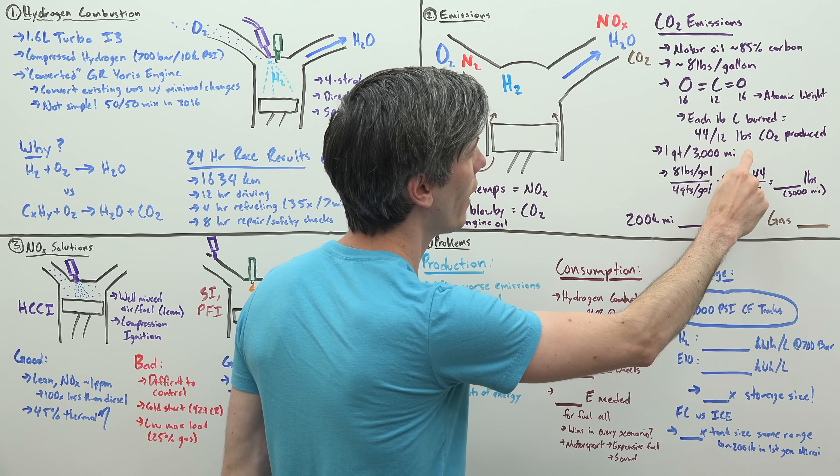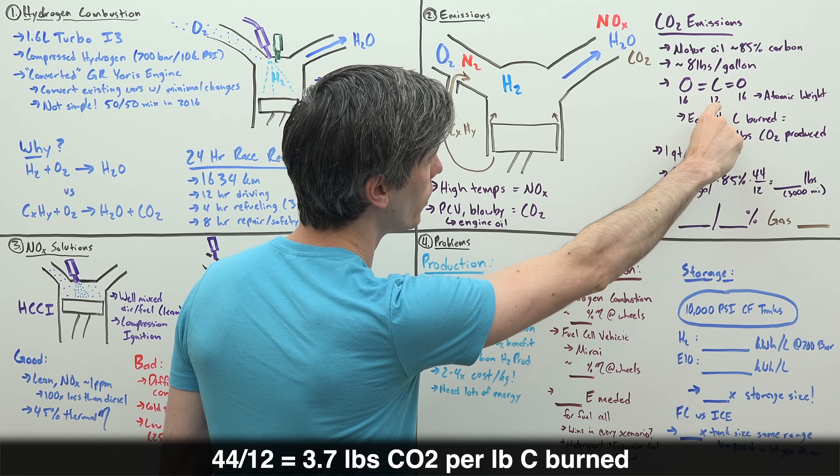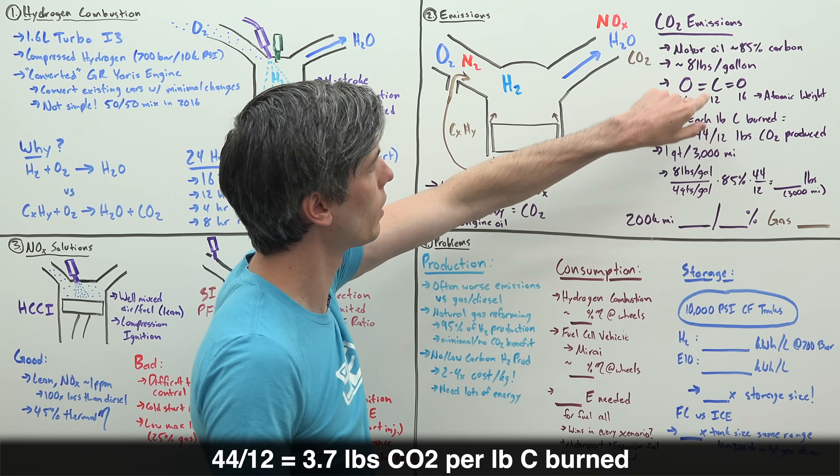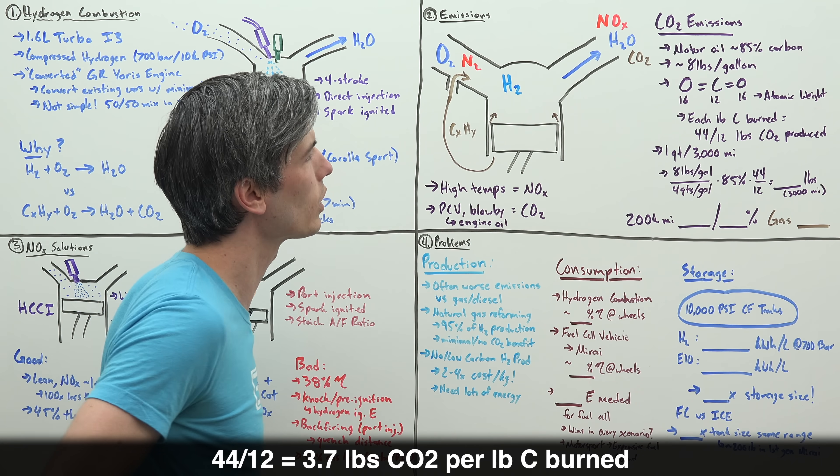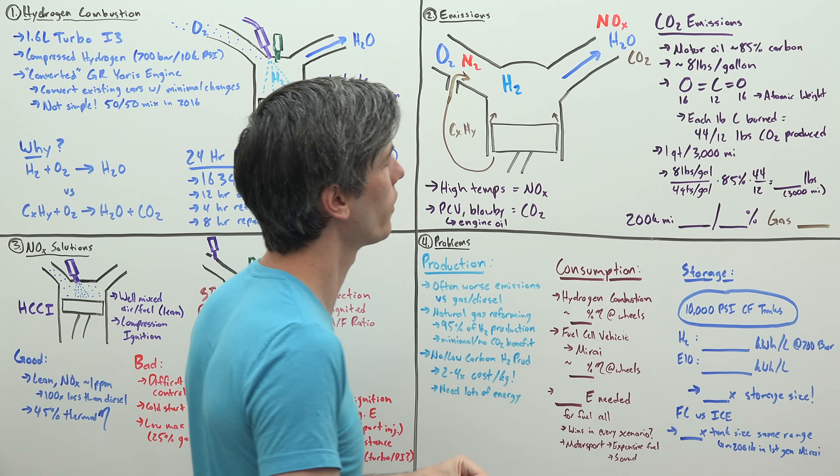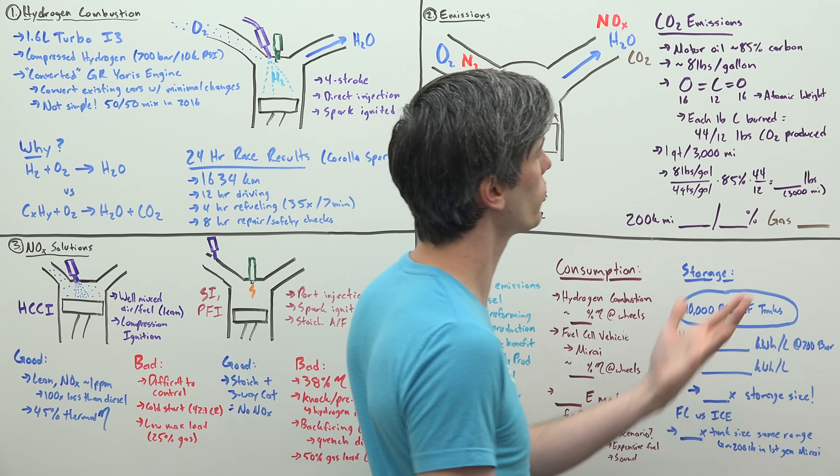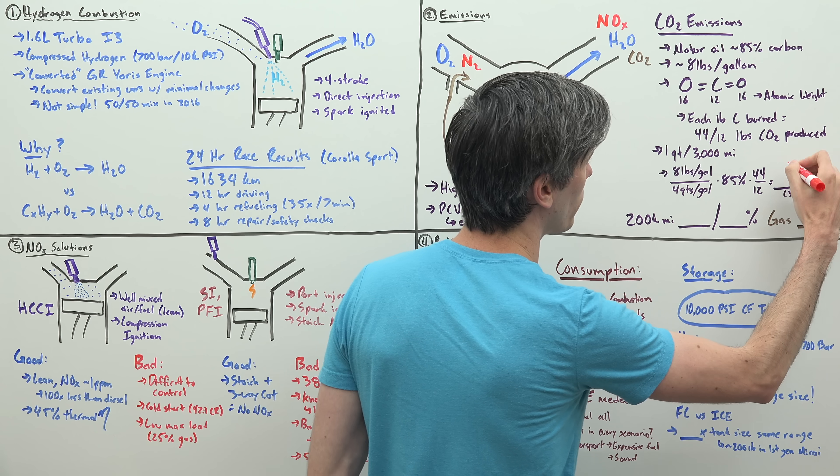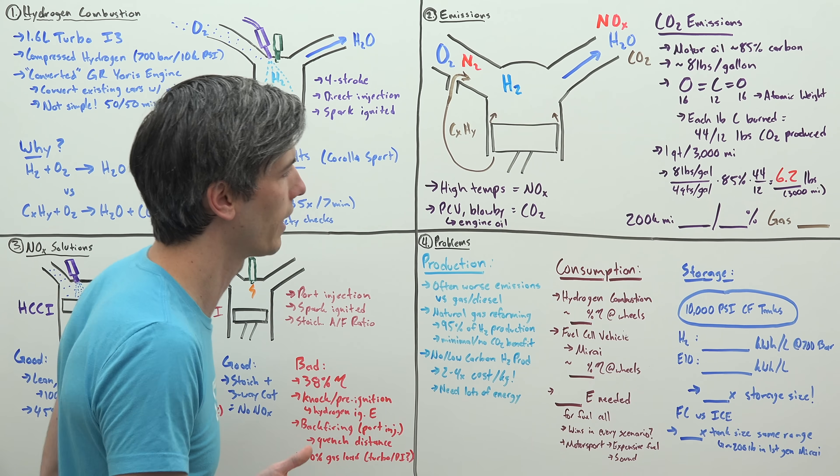If we multiply all of that across, in 3,000 miles, how much CO2 might we emit into the atmosphere if we're burning one quart every 3,000 miles? Just 6.2 pounds. Let's give some context here.